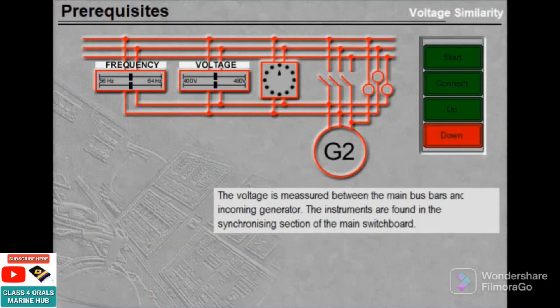The voltage is read between the main bus bars and the incoming generator. The instruments are found in the synchronizing section of the main switchboard.